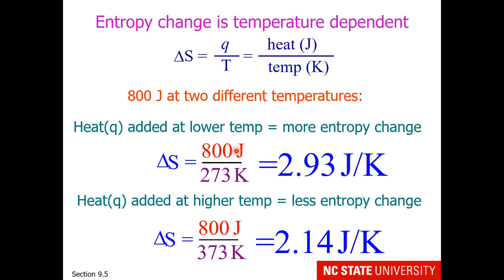800 joules added to a system where water is frozen at zero degrees Celsius adds an additional 2.9 joules per Kelvin to the system. On the other hand, if we add 800 joules to 373 Kelvin where water is boiling, we now have only added 2.1 joules per Kelvin of entropy.